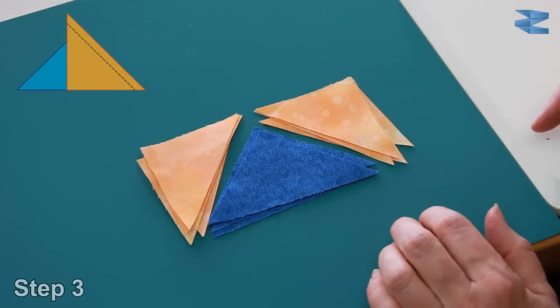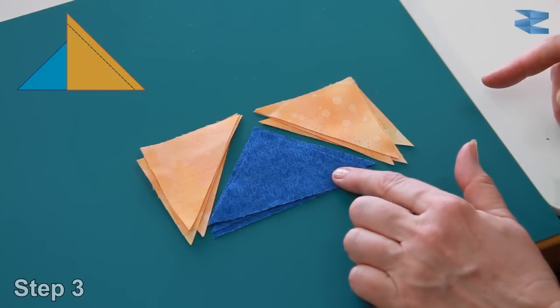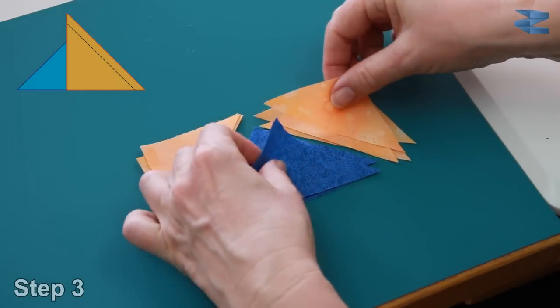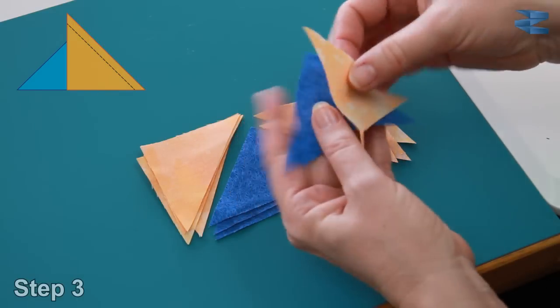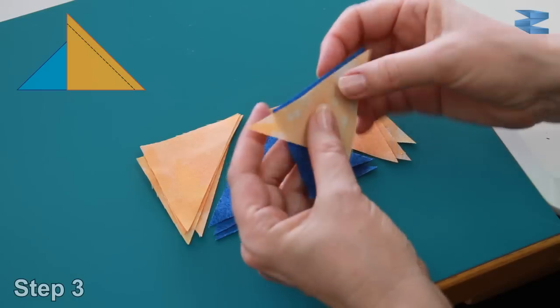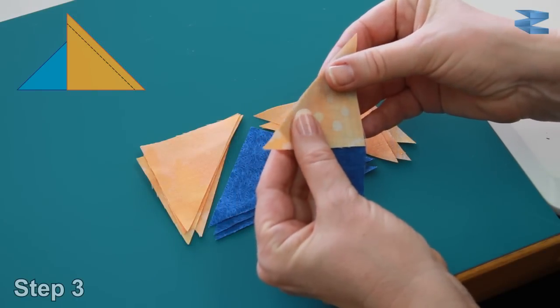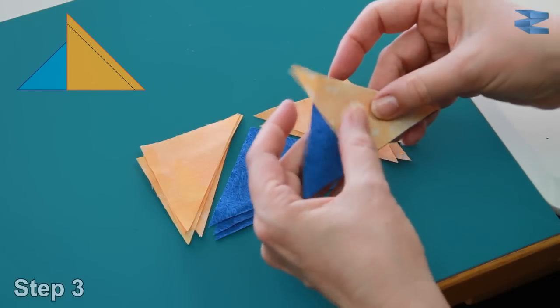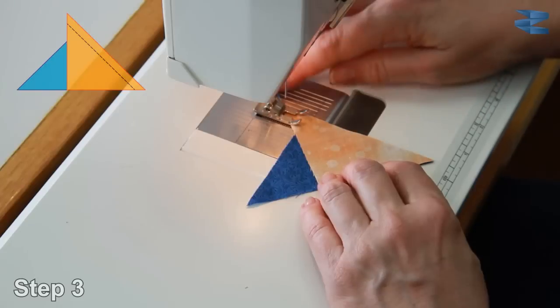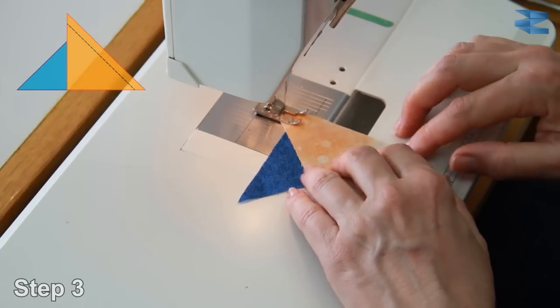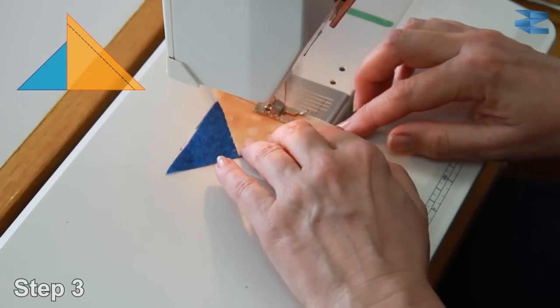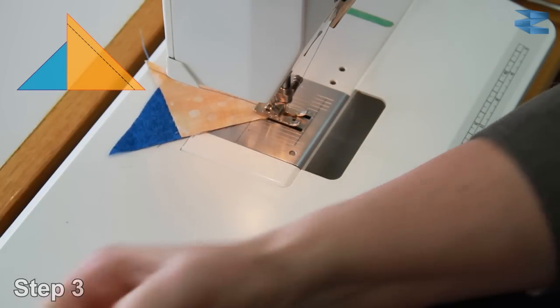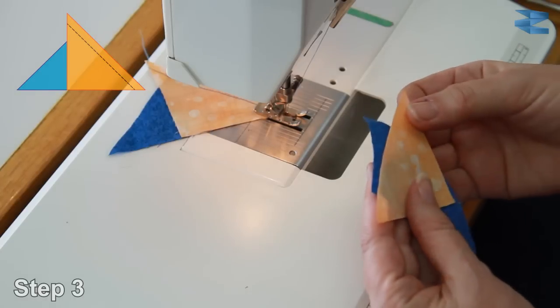Now I have laid out the pieces that I cut in the way the flying geese will look at the end. And what I do now is you take one blue one and the orange one and you line them up so that the corners, the sides match on the corners. So now I'm just going to sew the first and then we're going to chain piece the other three together.